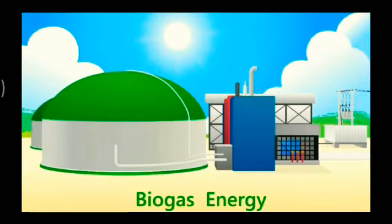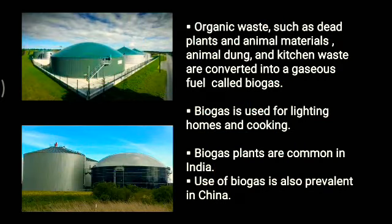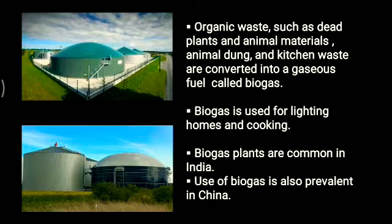Next we have biogas. Organic waste such as dead plants, animal materials, animal dung, and kitchen waste are converted into a gas called biogas. Biogas is used for lighting homes and cooking. Biogas plants are common in India in most rural areas, and use of biogas is also prevalent in China.